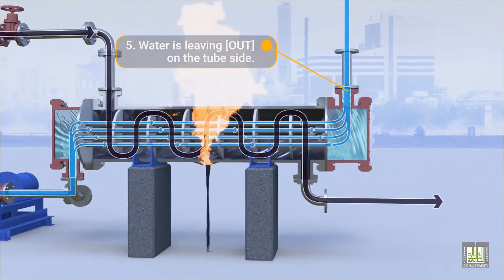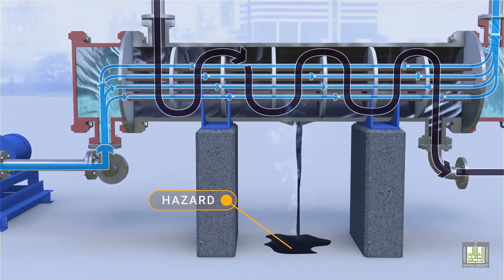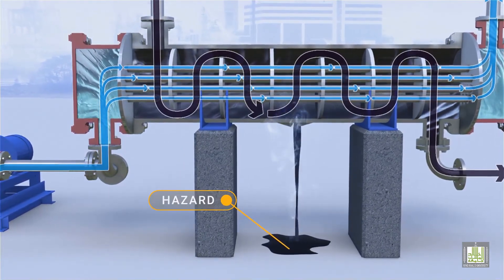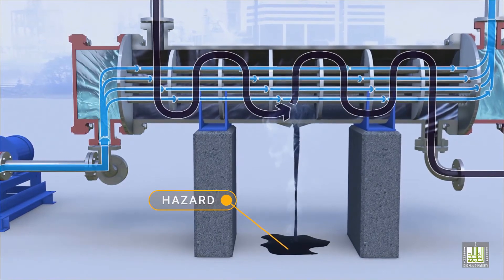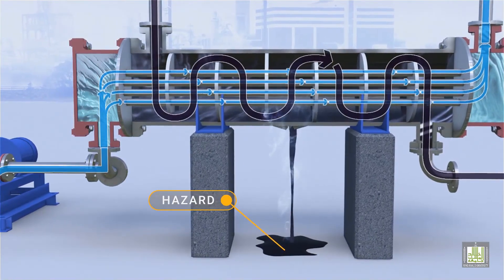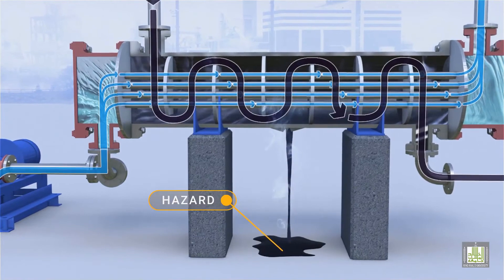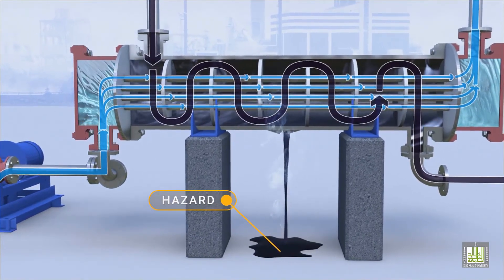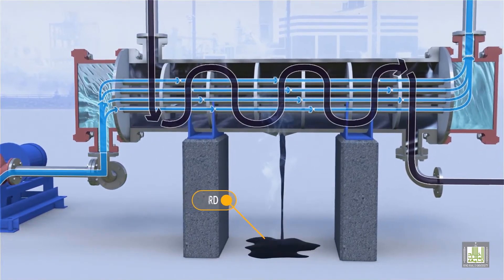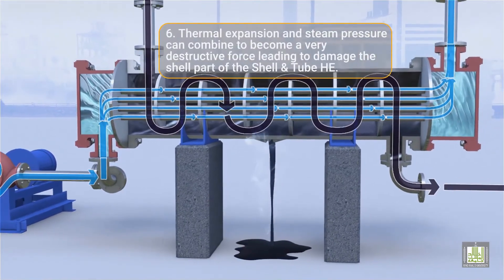The heat exchanger is typically provided with low or high point vents to remove water from the tubes or the shell. Uncontrolled mixing of water with hydrocarbons can generate high-pressure conditions and can damage systems that are not equipped with pressure-relief devices.